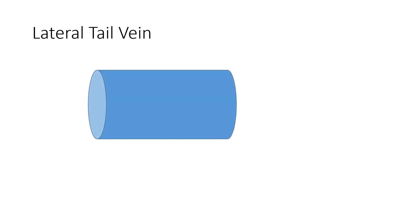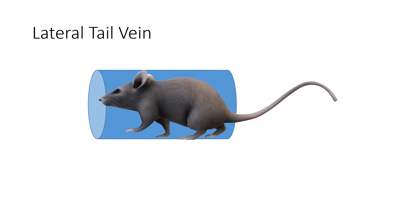The next method is the lateral tail vein. We use an animal holder to hold the animal, then locate the vein in the tail. To locate the vein, we apply a heat lamp, which causes vasodilation. Due to vasodilation, the vein dilates, and then we insert a capillary tube and collect the blood.